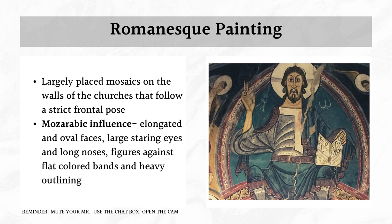Next is Romanesque painting. These are largely mosaic placements on the walls of churches following strict frontal poses — meaning the characters face the viewer directly. There is also what we call Mozarabic influence, referring to Arabic or Middle Eastern influence. This is seen in the Romanesque style: elongated and oval faces, large staring eyes, long noses, figures set against flat colored bands, and heavy outlining.